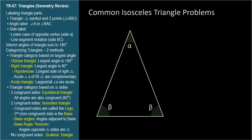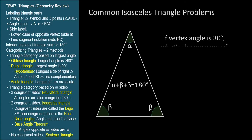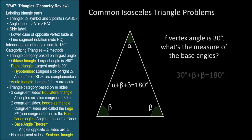Isosceles triangles are popular with trig instructors for word problems involving their angles. If you know the vertex angle or the base angle of an isosceles triangle, you can figure out the other angles by knowing that the three angles sum to 180 degrees. For example, given an isosceles triangle with a vertex angle of 30 degrees, what's the measure of the base angles? If we let beta equal the measure of the base angles, we have 30 degrees plus 2 beta equals 180 degrees. Subtracting 30 degrees from both sides gives 2 beta equals 150 degrees, so beta equals 75 degrees.